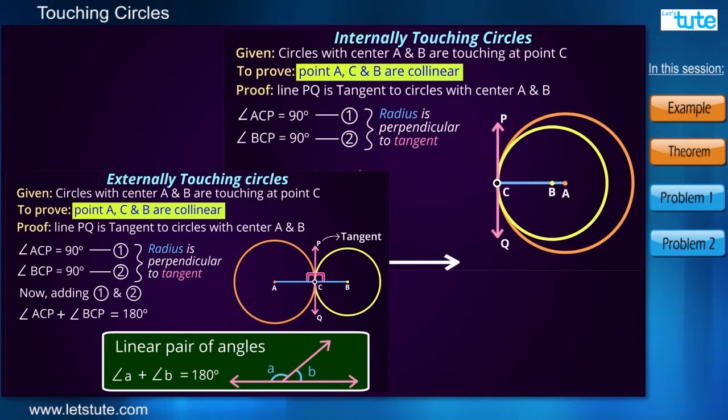So here we have learned that in externally touching circles and in internally touching circles, the radii and the point of contact will be collinear. Now let's see a few examples of how we can use these concepts in solving certain questions.